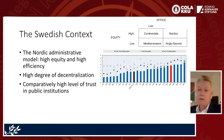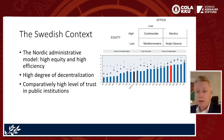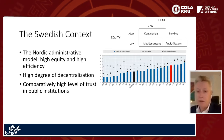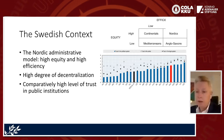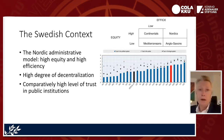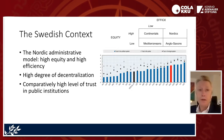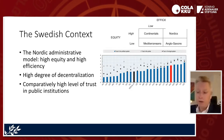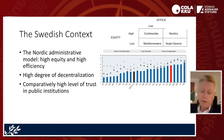Sweden is also characterized by a comparatively high level of trust in public institutions. The average OECD/EU trust level is shown as a reference, while Sweden, Norway, Denmark, Finland, and also Czechoslovakia show much higher trust in government. This means citizens trust that government does the right thing when investing, for example, in e-government.